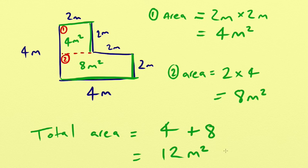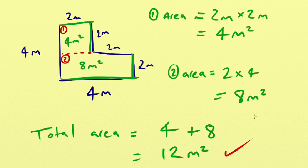And that is our answer. That's how you work out the area of a compound shape: you split it up into other shapes you can use — squares and rectangles — work out those areas separately, and then add them together.